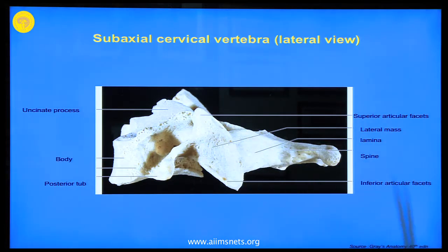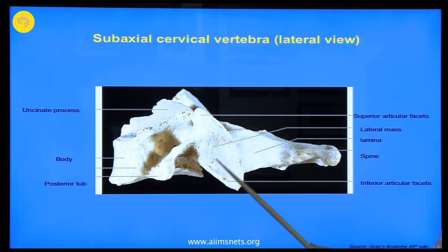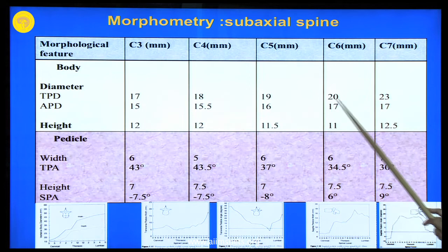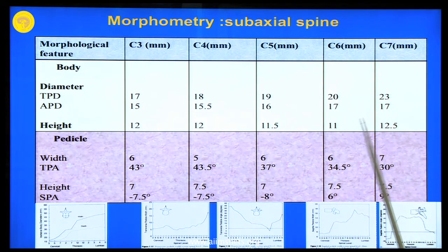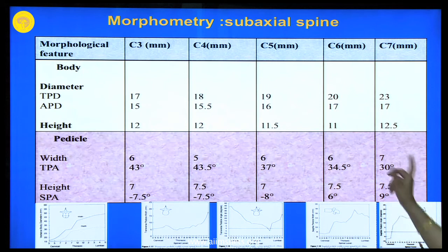The facets of the subaxial spine are oriented in the coronal plane — flat and oval; the superior ones are directed superiorly and posteriorly, the inferior ones more forwards. This orientation allows approximately 20 degrees of flexion and extension, a bit of lateral bending, and minimal rotation. The transverse diameter of the body varies from 17 to 23 mm in the subaxial spine; the anteroposterior diameter from 15 to 17 mm; pedicle width varies from 5 to 6 mm, with C7 slightly more at 7 mm.